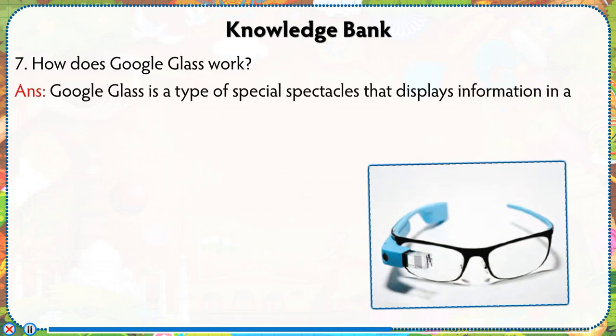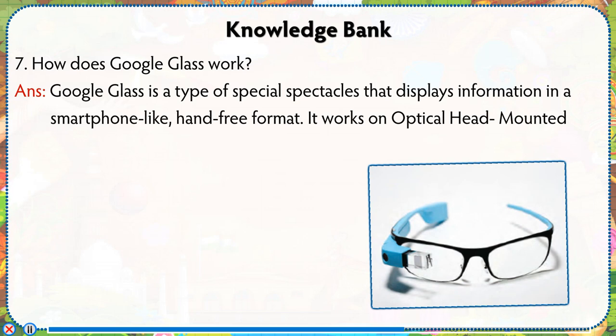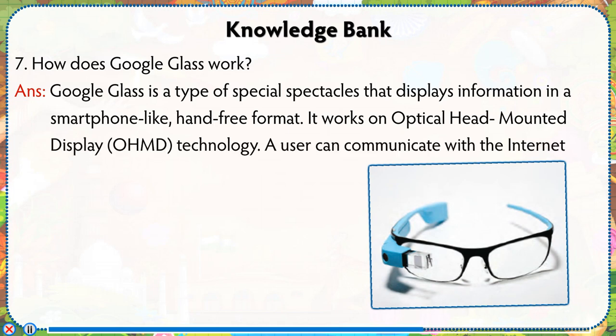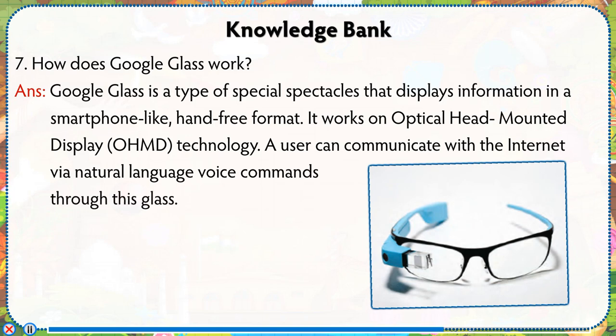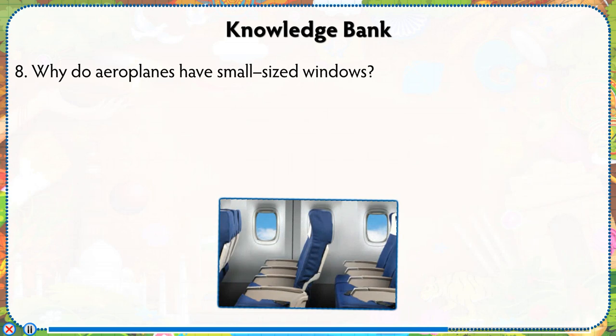How does Google Glass work? Google Glass is a type of special spectacles that displays information in a smartphone-like, hands-free format. It works on Optical Head-Mounted Display (OHMD) technology. A user can communicate with the internet via natural language voice commands through this glass.